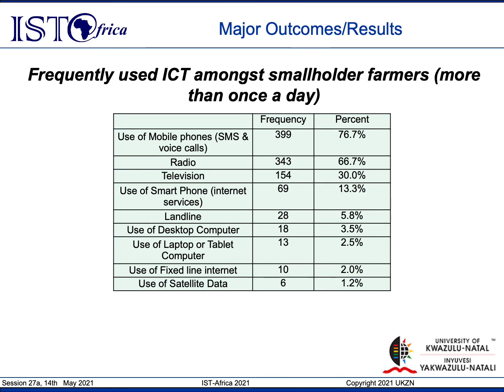In terms of the frequently used ICTs among smallholder farmers, the top three were the mobile phones, the radio, and the television in descending order. The mobile phone came in as the highest, most frequently used ICT at 76.7%. This was followed by the radio at 66.7% and then the television at 30%.